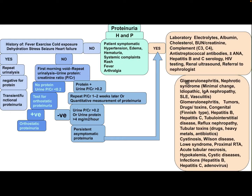Differential diagnosis for symptomatic proteinuria includes glomerulonephritis, nephrotic syndrome — minimal change, idiopathic, IgA nephropathy, SLE, vasculitis — tumors, drugs and toxins, and congenital causes like Finnish type. Also hepatitis B and C. Tubulo-interstitial diseases include reflux nephropathy, tubular toxins such as heavy metals and antibiotics, cystinosis, Wilson disease, Lowe syndrome, proximal RTA, acute tubular necrosis, hypokalemia, cystic disease, and infections including hepatitis B, C, and adenovirus.